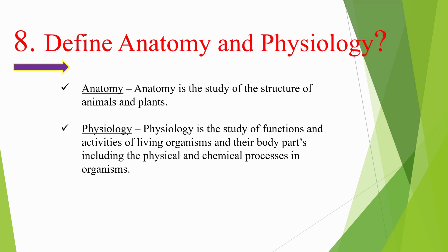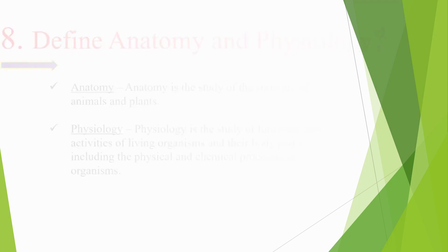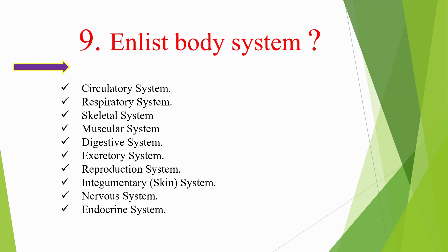Question number eight: Define anatomy and physiology. Anatomy is the study of the structure of animals and plants. Physiology is the study of functions and activities of living organisms and their body parts, including the physical and chemical processes in organisms. Question number nine: Enlist body systems. These include the circulatory system, respiratory system, skeletal system, muscular system, digestive system, excretory system, reproductive system, integumentary (skin) system, nervous system, and endocrine system.